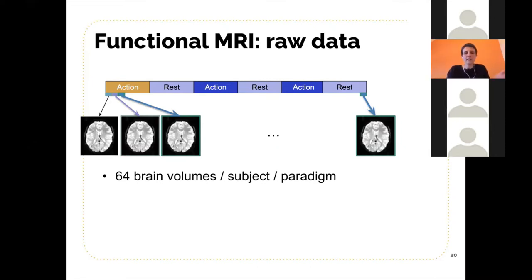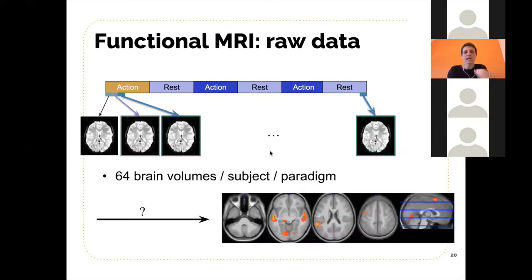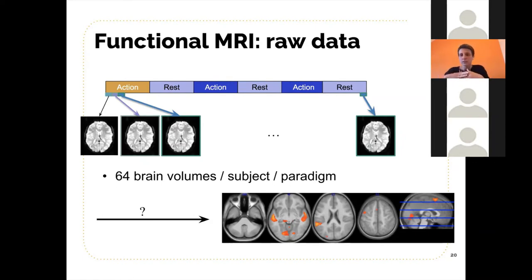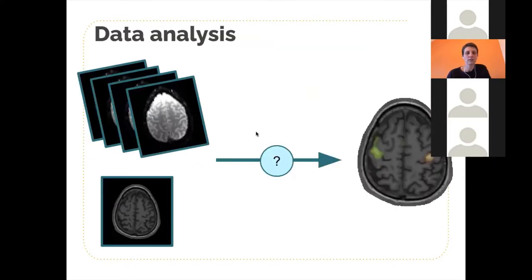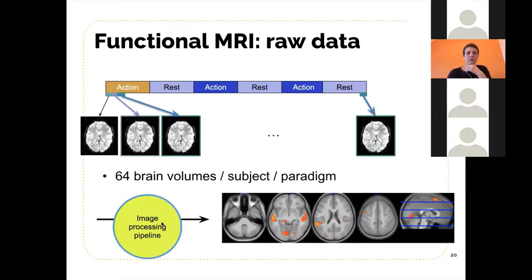We have to take these volumes and process them to get activation maps. In principle, activation maps represent a difference between what happens during action and during rest, with statistical analysis to determine whether differences are significant. There are a number of steps we have to accomplish to get from that raw 4D data to the final results.